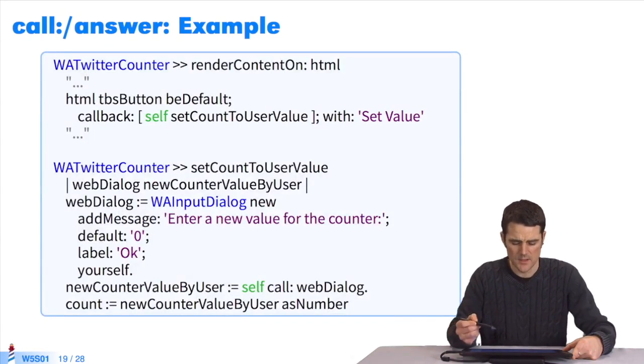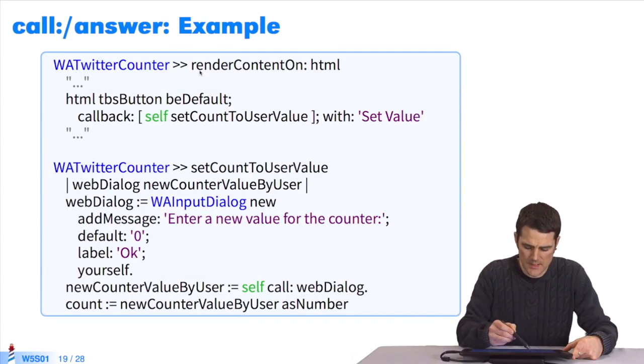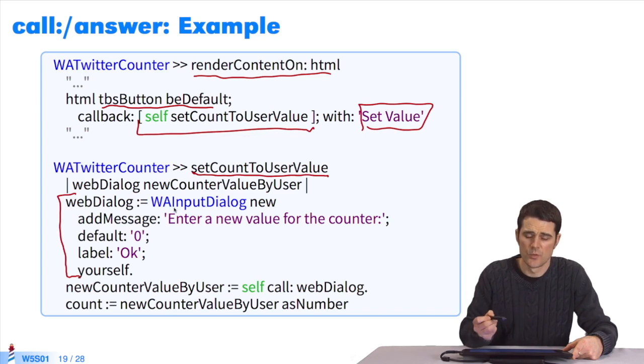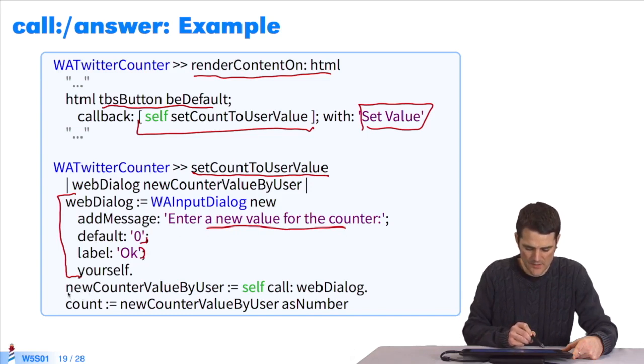How is this implemented? We've our Twitter counter with its renderContentOn method. To its renderContentOn method, we'll add a button, a TBS button. This button's called set value. When we click on this button, this callback will be executed. It's the setCountToUserValue method. SetCountToUser is defined here. What we do is we'll prepare a dialog box. We'll use another component made by Seaside, a dialog box, which we'll configure here. In this instance, we enter a new value for the counter. The default setting is zero, and we've an OK button. The really interesting element is this line.